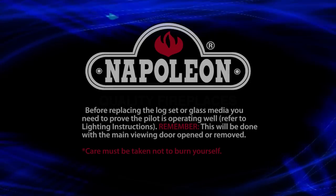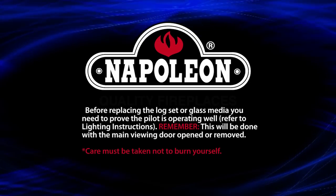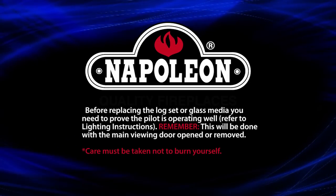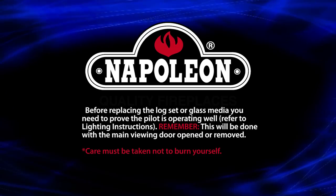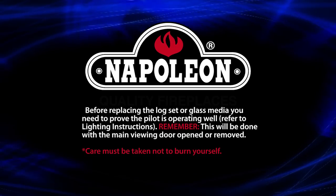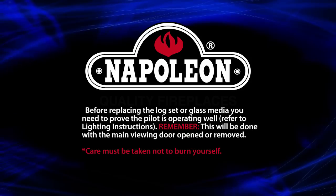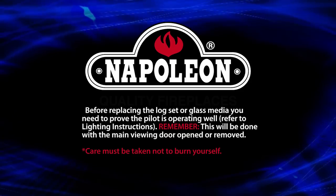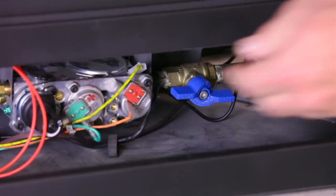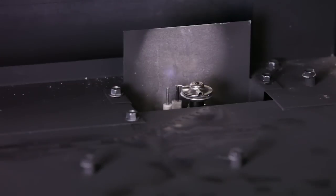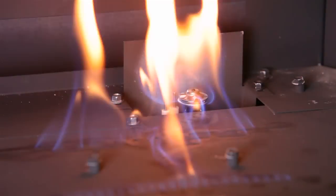Before replacing the log set or glass media, you need to prove the pilot is operating well. Refer to lighting instructions. Remember, this will be done with the main viewing door opened or removed. Care must be taken not to burn yourself. Turn on electricity and gas, turn on wall switch or remote control. The pilot will light. Note it is normal for the pilot to spark a number of times before lighting. Then the main burner will light.